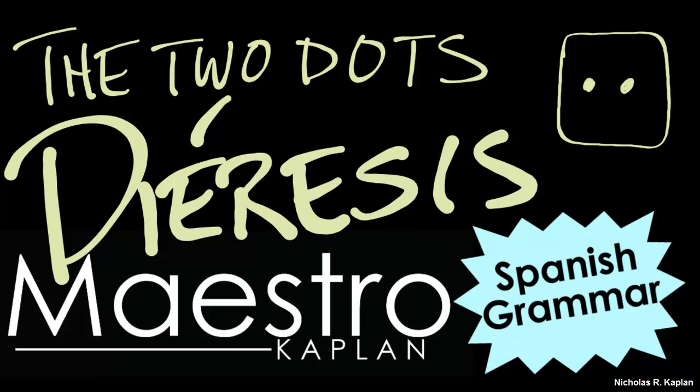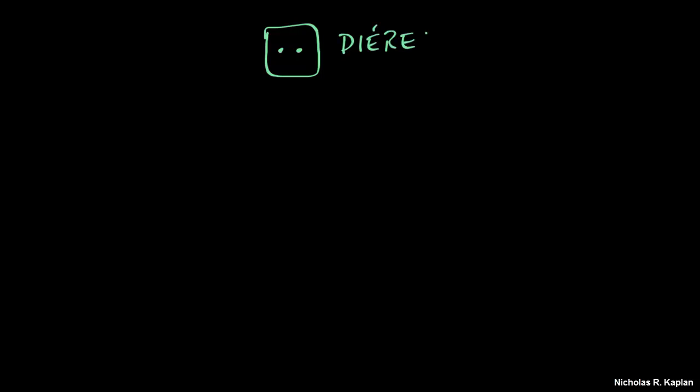You ever see these two little dots before in Spanish? Yeah, they have a fancy name. The fancy name is diéresis. I call them two little dots. I'll be very honest, I don't even know the English word for it.